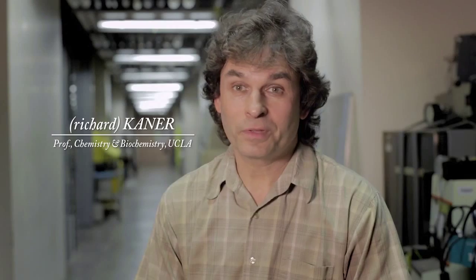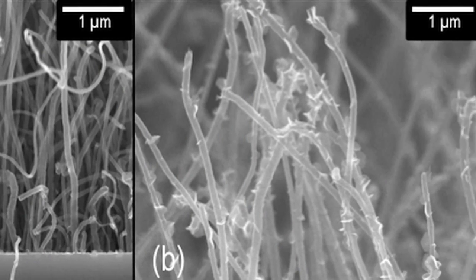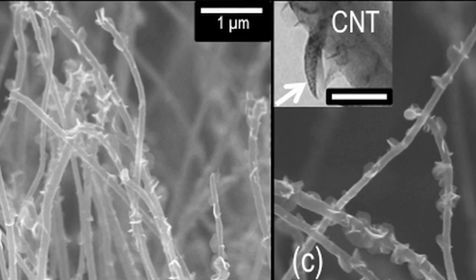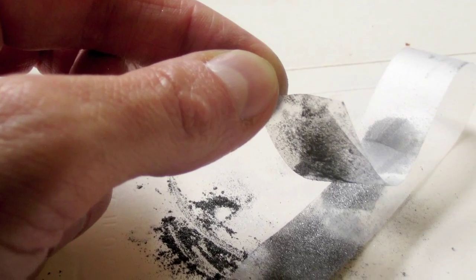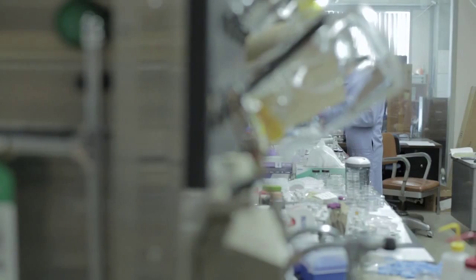Graphene is a single layer of carbon. It's one of the strongest materials ever known and it's completely flexible. The discoverers of graphene won the Nobel Prize in 2010. However, the method they used to make it—taking graphite and peeling it with Scotch tape—is not practical, so we set out to find a better method.